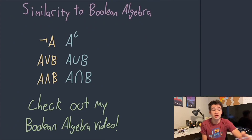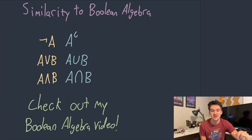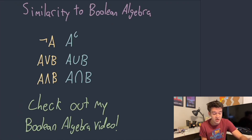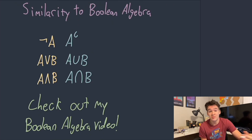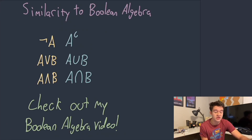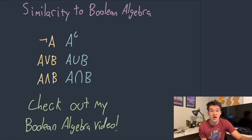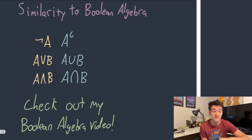I just want to talk about how similar this is to Boolean algebra — if you are not familiar with Boolean algebra, check out my ByteSized video on that. The complement of A is the same sort of thing as NOT A. The union of A and B is very similar to A OR B. And the intersection of A and B is similar to A AND B, both in their symbolism and in how they actually work. By using set theory, you can actually form a complete basis for Boolean algebra and build Boolean algebra out of set theory. All of the properties and laws with regards to these operators apply pretty much the same way to set theory, so you should definitely check out that video if you're interested in this aspect of set theory.